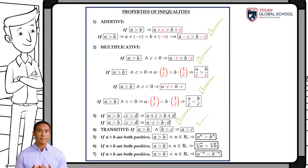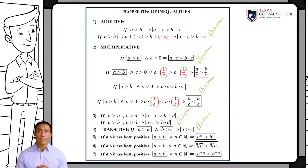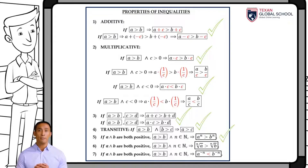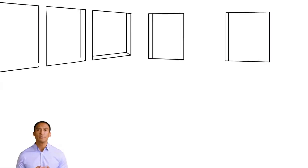The transitive property indicates that if a value A is greater than B and B is greater than C, then A will be greater than C. Finally, raising to some power or applying a positive root does not change the inequality. But if it is raised to a negative power, the sign must be reversed.